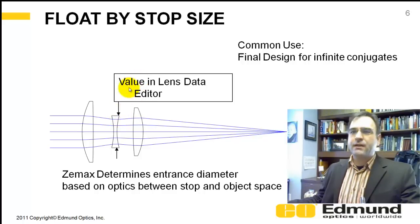The value you set here, there is no value in the general tab. You've just got a value set in your lens data editors, what that aperture value is. And ZEMAX is going to determine what this entrance pupil is.